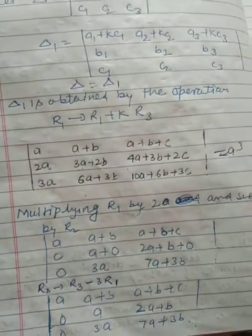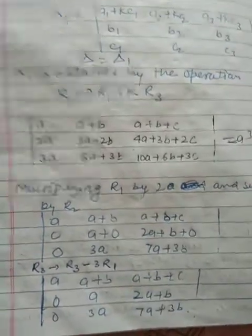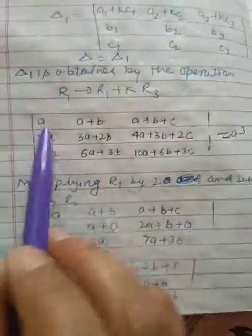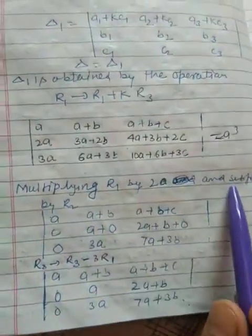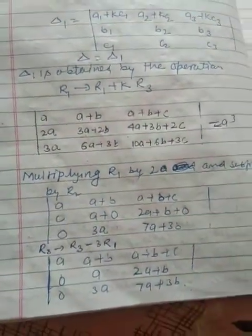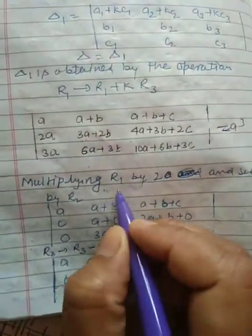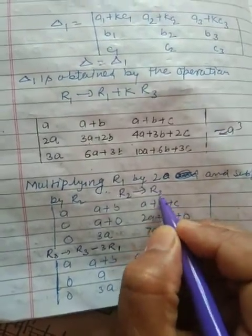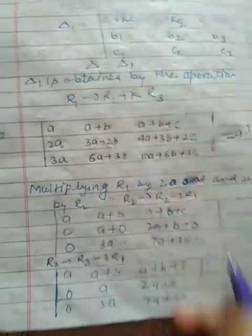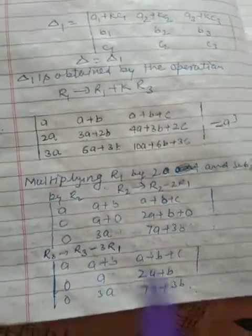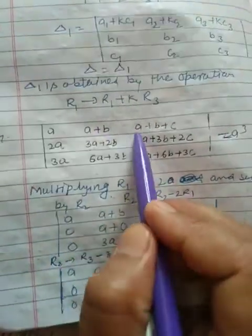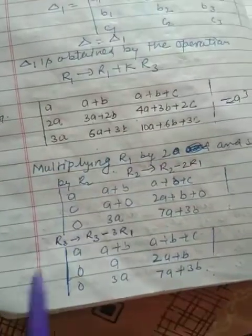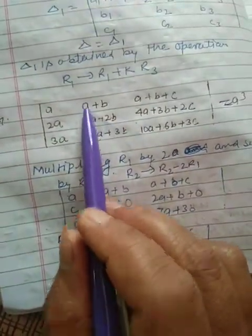Let's see what I will do. Multiplying R1 by 2, we are doing R2 → R2 - 2R1. In matrix notation, we write this as change in R2. Now multiply: it is 2a, 2a+2b, 2a+2b+2c, and then subtract by R2.